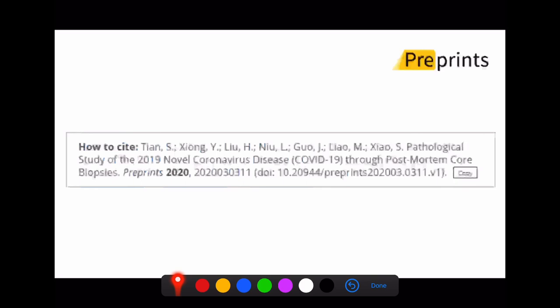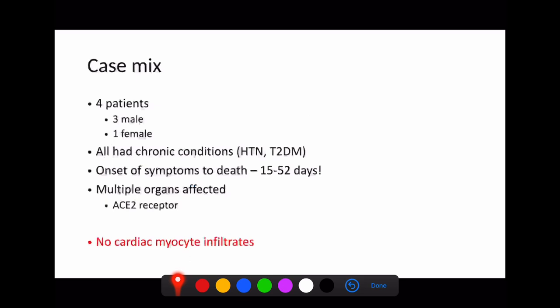Another really interesting study, and this again hasn't been peer-reviewed, it has just been published before print, in pre-prints, is this study which is looking at the pathological status of patients who have had post-mortem biopsies. They looked at four patients, three males and one female. They all had chronic conditions, one had immunosuppression, one had cirrhosis, and they all had hypertension and type 2 diabetes. Their onset of death was between 15 and 52 days, so quite a wide spectrum there of disease severity, but they all did die.